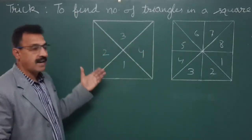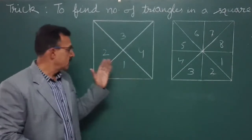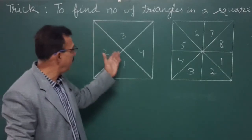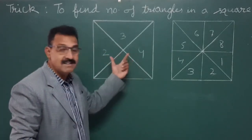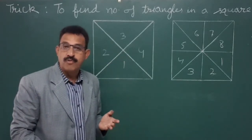We should always keep this figure in mind. We see in a square that the diagonals are bisecting each other and they are making four triangles.